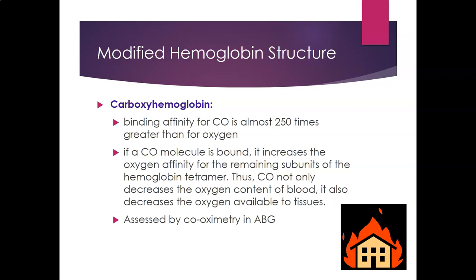Modified hemoglobin structures include carboxyhemoglobin. The binding affinity of hemoglobin for carbon monoxide is almost 250 times greater than that for oxygen, so once hemoglobin binds carbon monoxide it will not release it. Additionally, a bound carbon monoxide molecule increases the oxygen affinity of the remaining subunits, so they hold oxygen tighter and delivery to tissues is impaired. Carbon monoxide therefore decreases both the oxygen content of blood and oxygen delivery to tissues. Exposure is assessed by co-oximetry and ABG, and occurs through smoke, fire, and gas leaks.